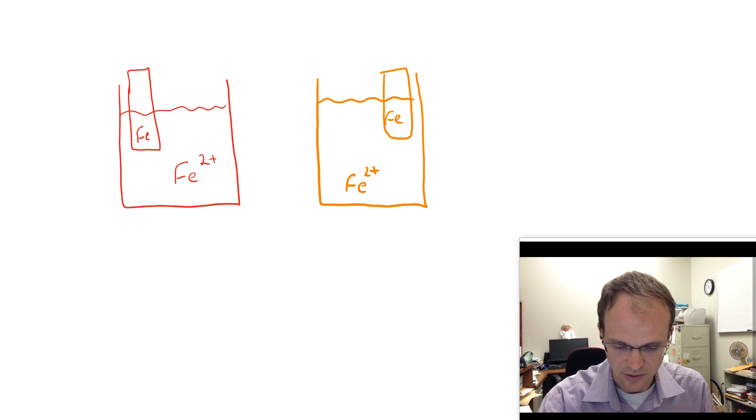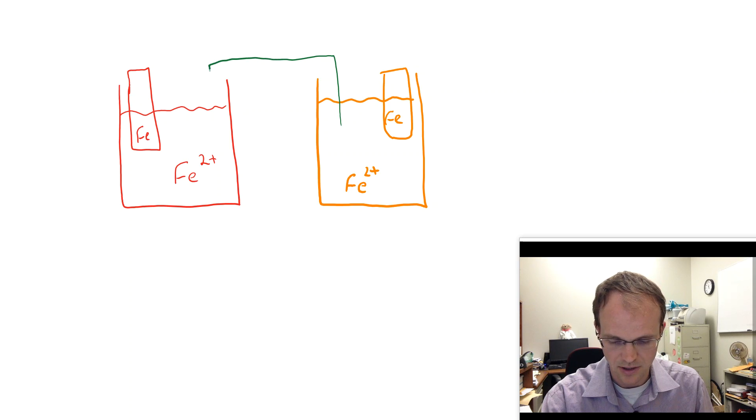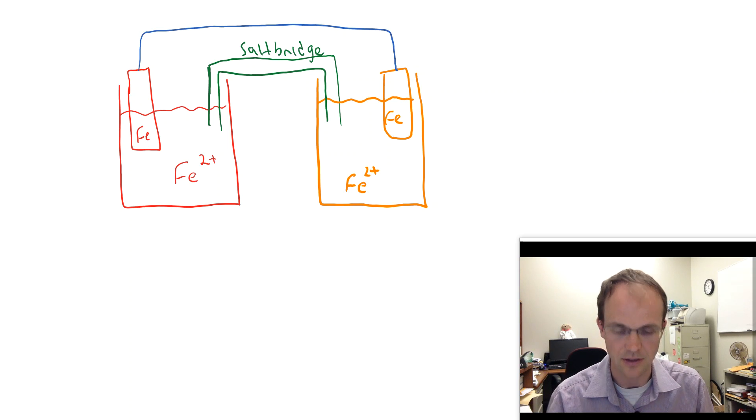Now, of course, we're going to do the things we always do for galvanic cells. We are going to connect them by our salt bridge. And we're also going to connect them by a wire between these iron electrodes.